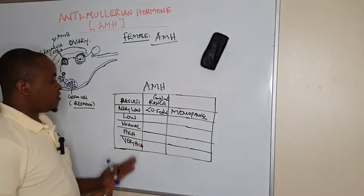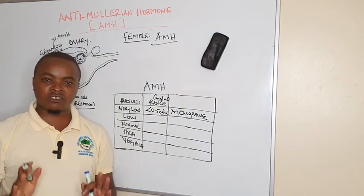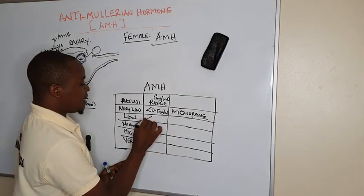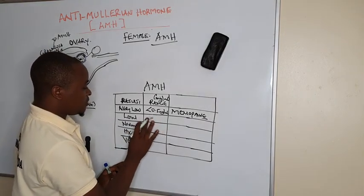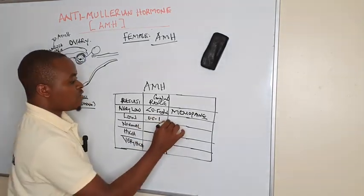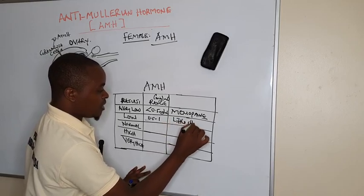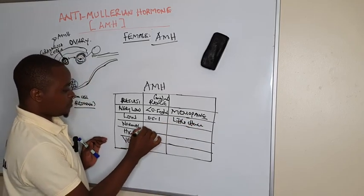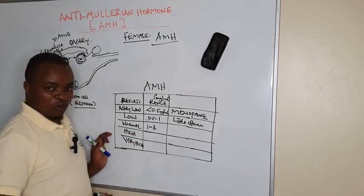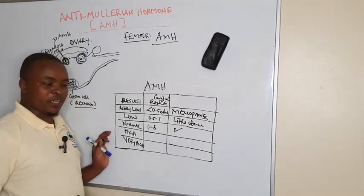After doing it, if you find it is very low, it means egg reserves are done, so there is no chance of producing. But if it is between 0.5 to 1 nanograms per mil, you have limited chances. When it is between 1 to 3 nanograms per mil, here it is normal. Here you are very safe, you can get pregnant.